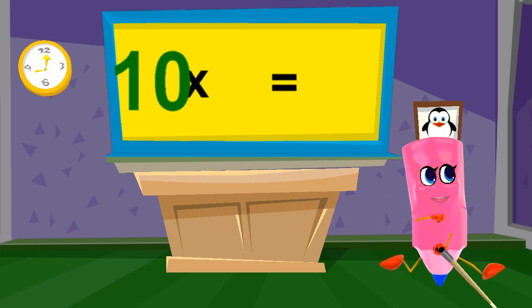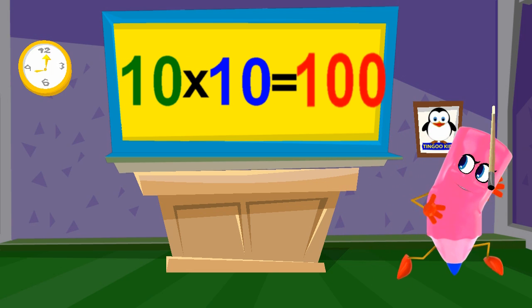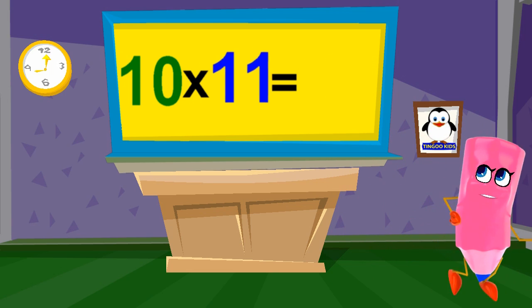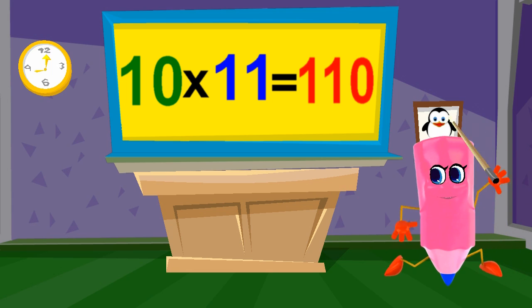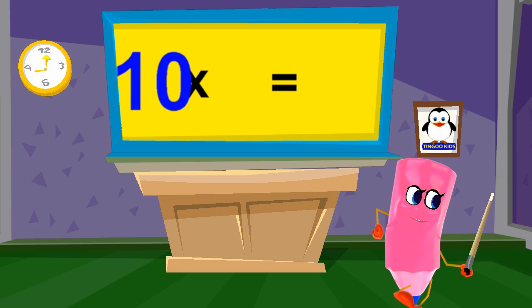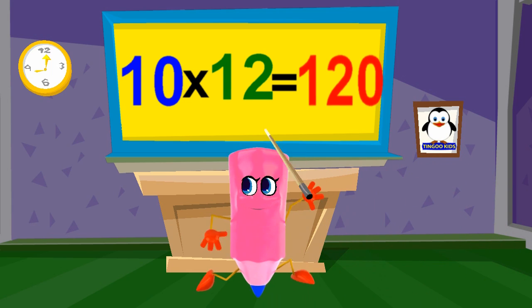Ten times ten is one hundred, ten times eleven is one hundred and ten, ten times twelve is one hundred and twenty.